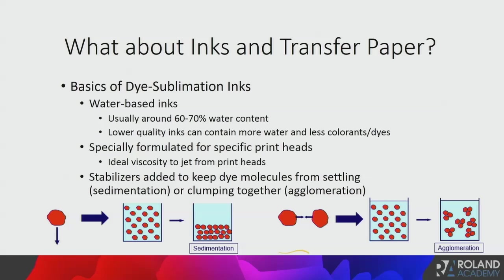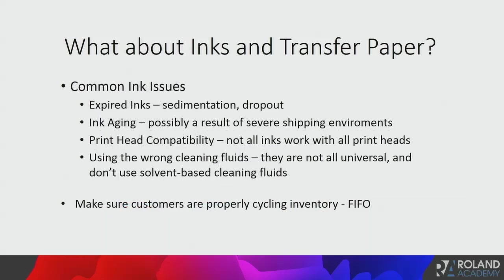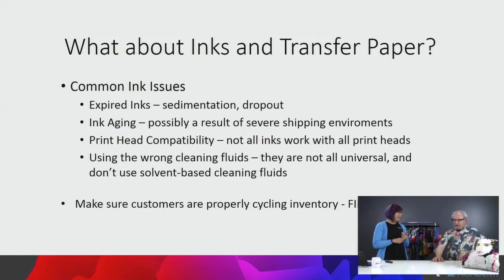Within sublimation inks, the two biggest issues — especially if the ink is not used a lot or if it sits too long — are settling and clumping. There are stabilizers added to inks to make sure the molecules aren't settling, where gravity just pulls everything down. Without stabilization, you get clogs, dropouts, and similar issues. The molecules can also become attracted to each other, forming clumps, causing ink dropouts and clogged printheads. Make sure whoever is managing ink restocking doesn't leave the old ones in the back — always rotate. I've had ink sitting for two years and then had problems. There is a shelf life, so go in and make sure you're rotating inventory or you will have an issue.